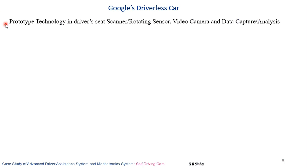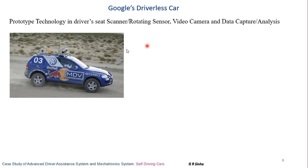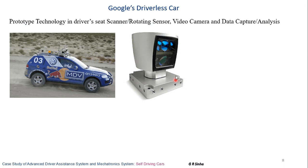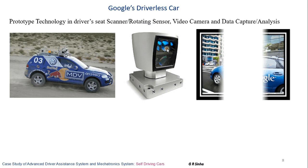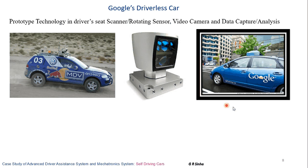Google's driverless car: a prototype technology was tested by Google where the driver seat area is equipped with a rotating scanner sensor, video camera, data capture, and analysis systems. The car has many cameras and sensors connected all around it to help guide its ride. One example is a LiDAR-based sensor detection system used in the Google-tested car.